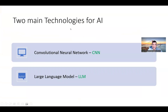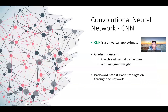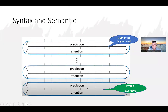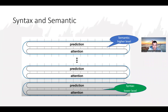AI has two main technologies: convolutional neural networks (CNN) and large language models (LLM). The CNN is a universal approximator using gradient descent and backpropagation. You give the attention, there's a prediction, and this happens at multiple levels — higher and lower. From the attention to the prediction, it creates content for you. That's the CNN.